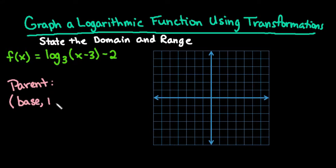1 comma 0, and 1 over the base comma negative 1. These are the points that a parent function will always go through.